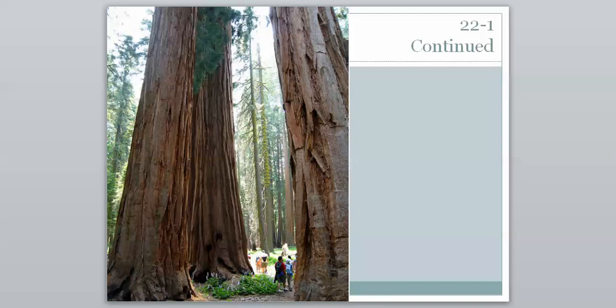Alright, Bio 2, welcome back. We are continuing with section 1 in chapter 22 about plants. We got some general characteristics of plants at the beginning, and now we're going to talk about where plants came from, how they came to be, how they are today, by taking a look at early plants.